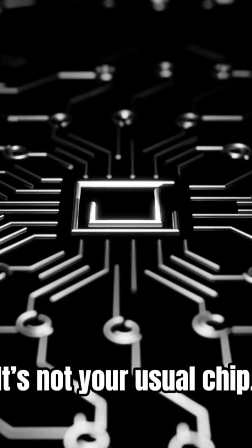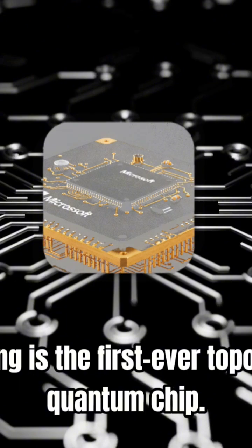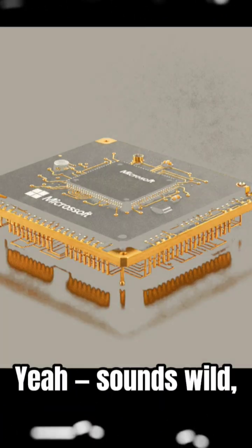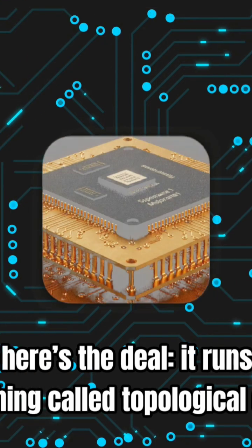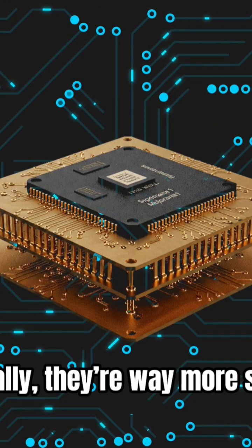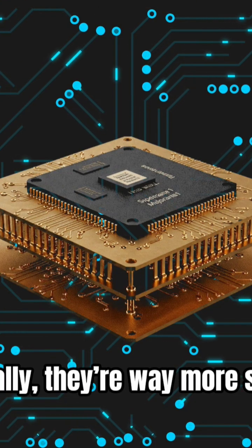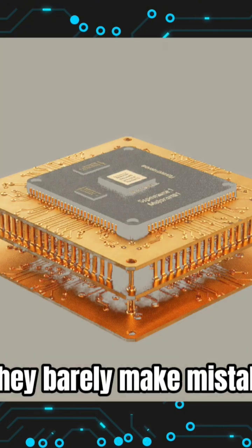So what is it? It's not your usual chip. This thing is the first ever topological quantum chip. Yeah, sounds wild. But here's the deal, it runs on something called topological qubits. Basically, they're way more stable, way more reliable, and they barely make mistakes.